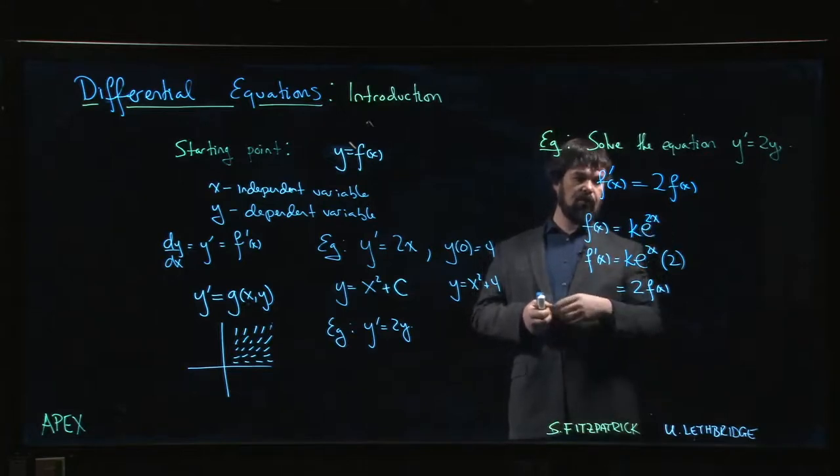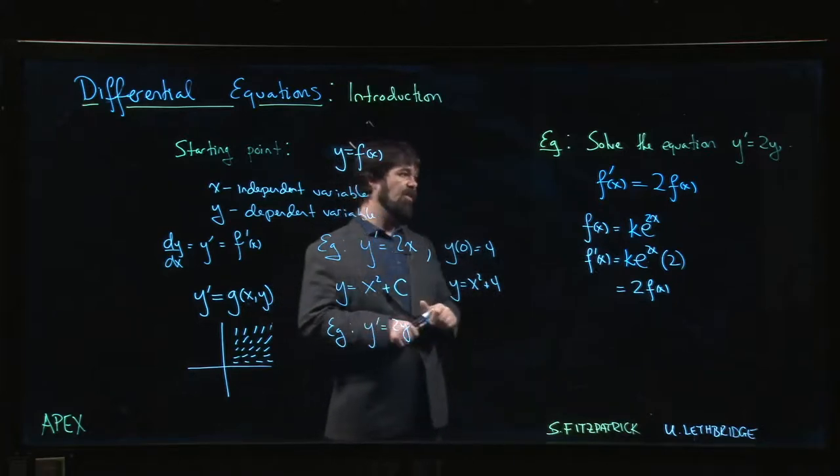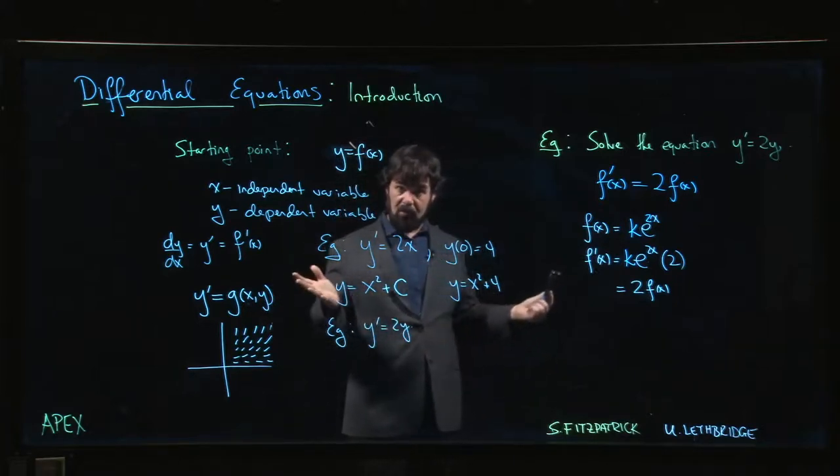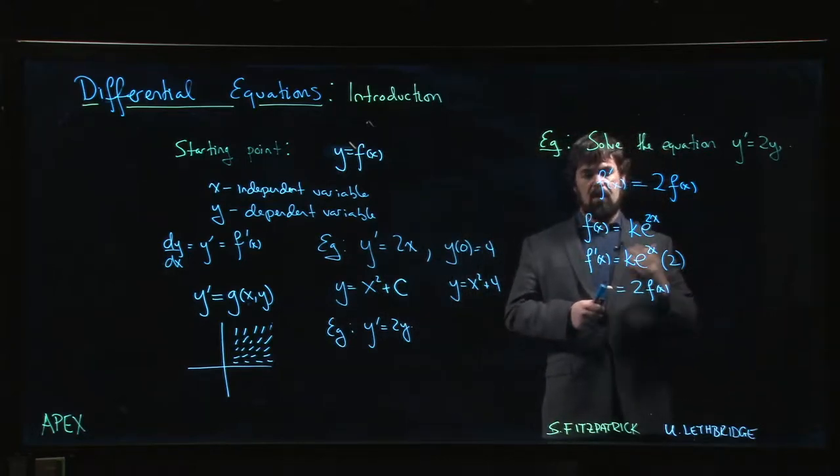It's an exponential function, although there's a possibility that maybe k equals zero—that's one function that does work. Zero equals two times zero. So we have an answer, and we'll see later on that this is indeed the most general answer.